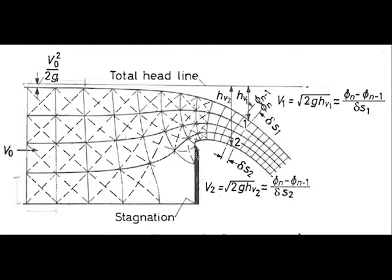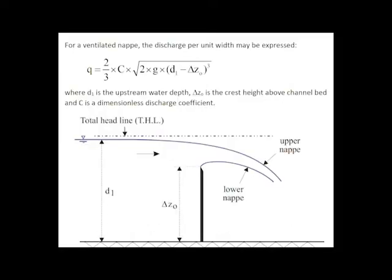The following sketch illustrates a graphical solution of a flow net analysis. For a ventilated nappe, the discharge per unit width may be expressed as a function of the relative upstream water depth, in which C is a dimensionless discharge coefficient.